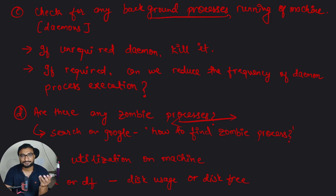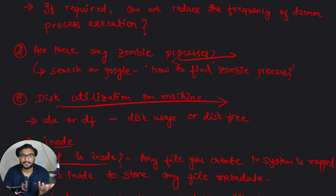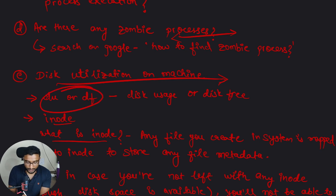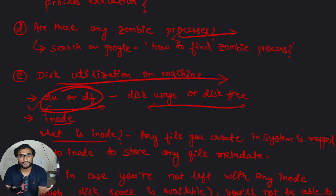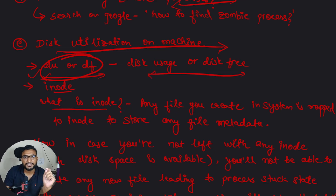Also check for zombie processes and kill them. Moving to disk utilization: if the disk space available on your machine does not meet application requirements — for example, an application needs 50GB but only 25GB is allocated — that becomes a bottleneck. You can check disk usage using the `du` (disk usage) and `df` (disk free) commands, or by reviewing metrics on CloudWatch.